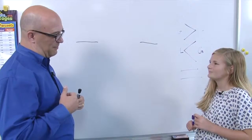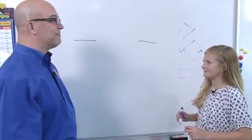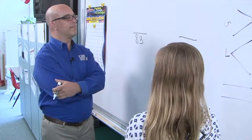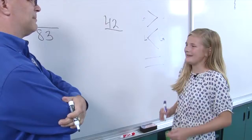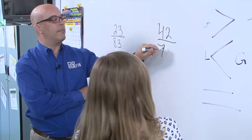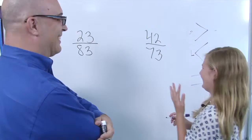So we're going to compare two fractions. You are going to provide all the numbers and I will put them where I want. Nothing over two digits — we won't make it too hard for you. The student provides: eighty-three, forty-two, twenty-three, and seventy-three. You can't put them anywhere — I put them. That was the deal.